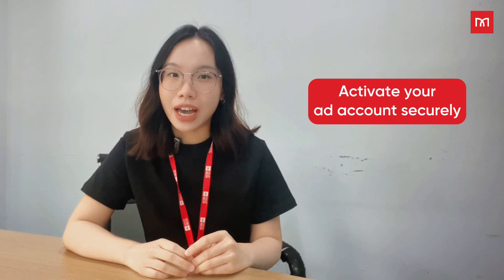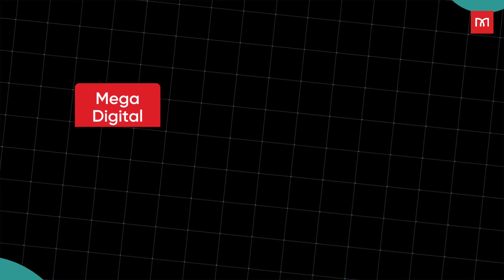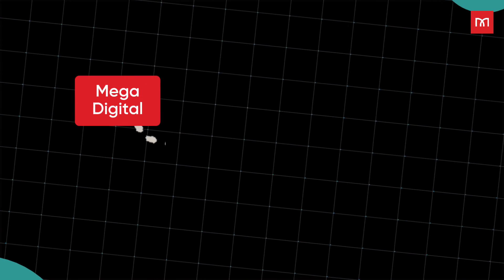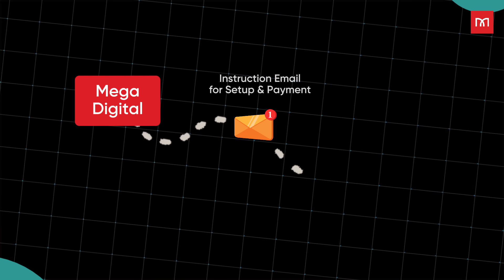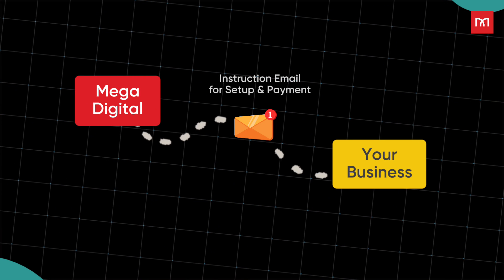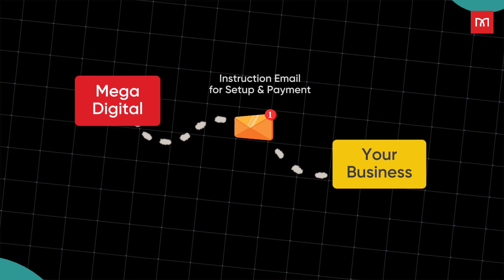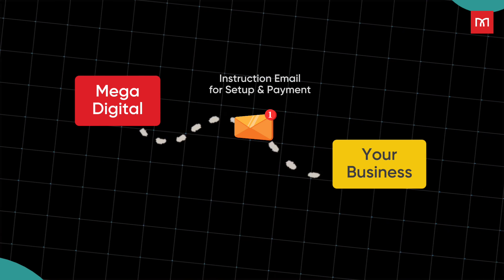Once approved, we will guide you through the process of activating your TikTok ad account and funding it through secure, official channels. Our team will guide you through the account onboarding, including setting up your campaign environment and enabling billing features. Everything is handled through transparent channels.